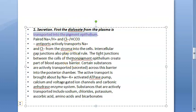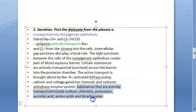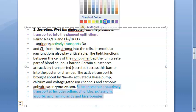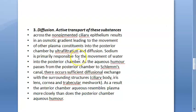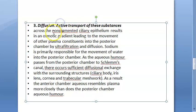After ultrafiltration, secretion occurs. The dialysate from the plasma is transported into the pigmented epithelium by active transport. Substances that are actively transported include sodium, chloride, potassium, ascorbic acid, amino acids, and bicarbonates — everything is being secreted.